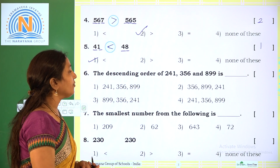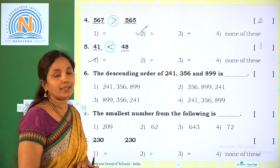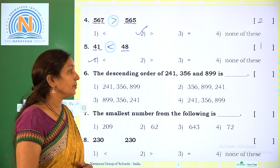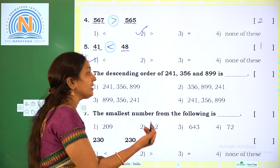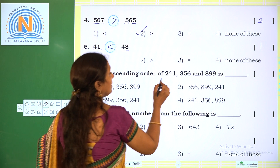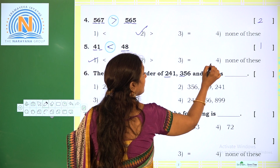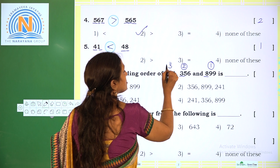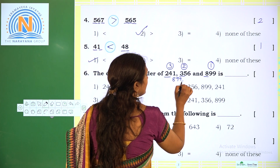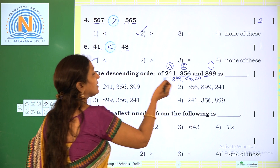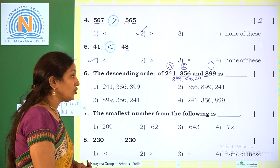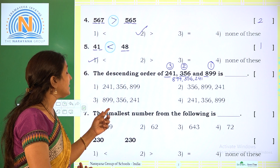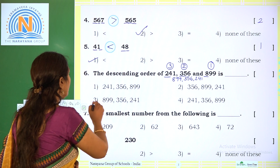Next: the descending order of 241, 356, and 899. Descending order means numbers arranged from greatest to smallest. All are 3-digit numbers. Checking the hundreds place: 2, 3, and 8. The greatest is 8, so 899 comes first. Then 3, so 356 comes second. Then 2, so 241 comes third. The descending order is 899, 356, 241. The required option is 3.